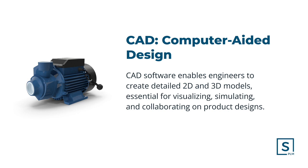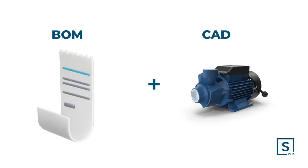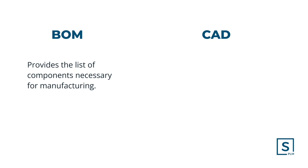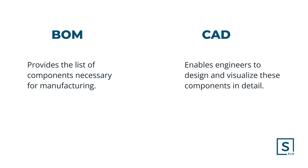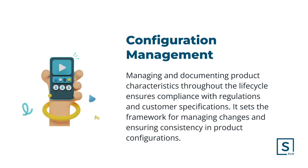CAD — Computer Aided Design. CAD software enables engineers to create detailed 2D and 3D models, essential for visualizing, simulating, and collaborating on product designs. Together, the BOM and CAD complement each other in the product development process: the BOM provides the list of components necessary for manufacturing, while CAD enables engineers to design and visualize these components in detail.